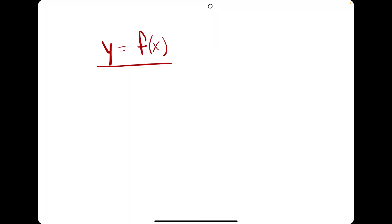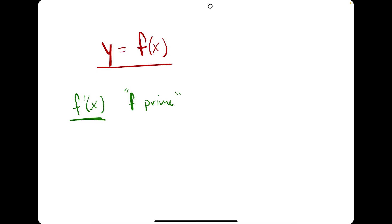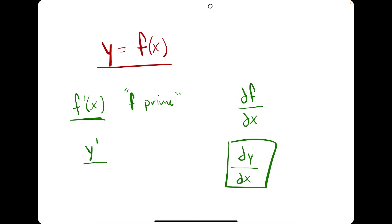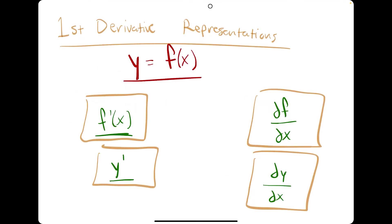Let's talk about some of the representations of the derivative of y equals f(x). The first one is f prime — f with a little apostrophe, written as f prime of x. Since f equals y, y prime is another one. df over dx is another one. These all just represent the first derivative of the function f — specifically, the derivative of f with respect to x. Since y equals f, there's also dy over dx, meaning the derivative of y with respect to x. So: f prime, y prime, df over dx, and dy over dx are all first derivative representations of y equals f(x).